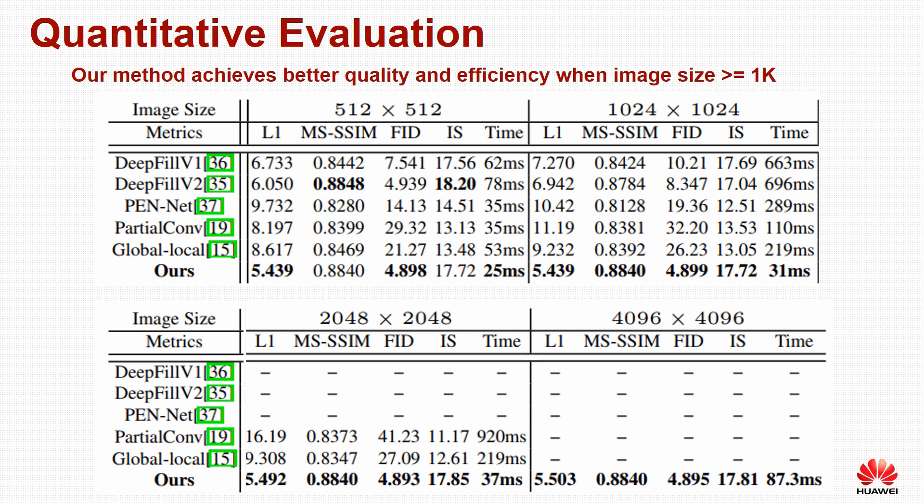When tested on 1K images, the quality achieved by other methods deteriorates significantly, while our method performs consistently well. In terms of efficiency, our method is orders of magnitude faster than other methods. When tested on 2K or 4K images, most prior art cannot perform inference due to GPU memory limitations, while our method achieves constant quality and inference time does not increase much.